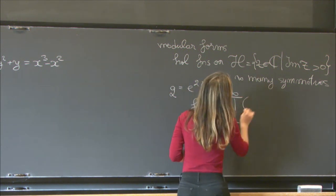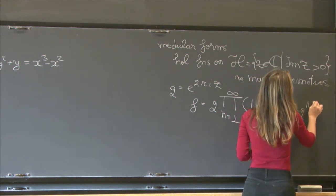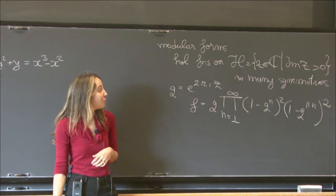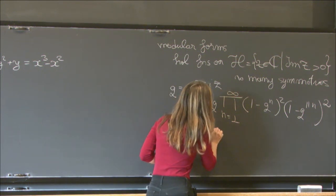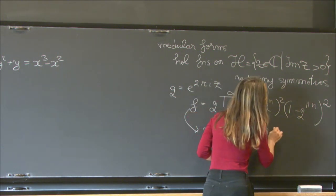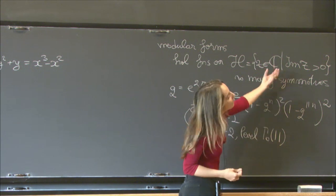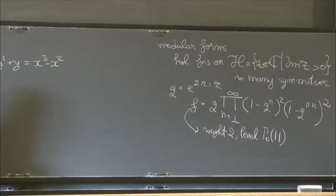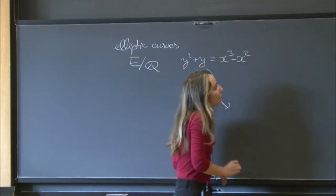For example, take the product from n=1 to infinity of (1 − q^n)^2 (1 − q^{11n})^2. Expanding it out gives a power series in q. This is a weight 2 modular form of level Γ₀(11), where Γ₀(11) is a congruence subgroup specifying exactly what symmetries this modular form satisfies. These are our two worlds, and it turns out you can connect them — the objects that connect them are Galois representations.